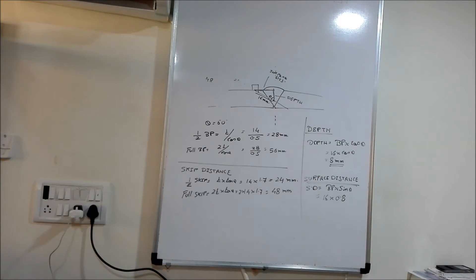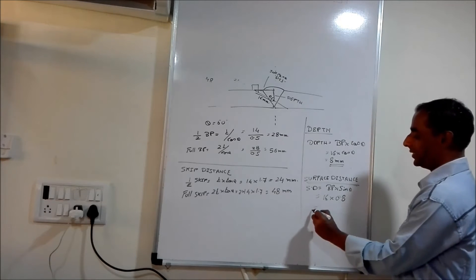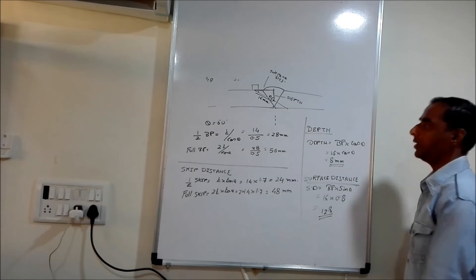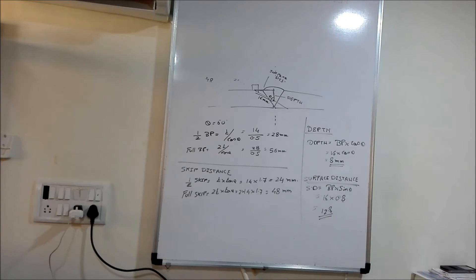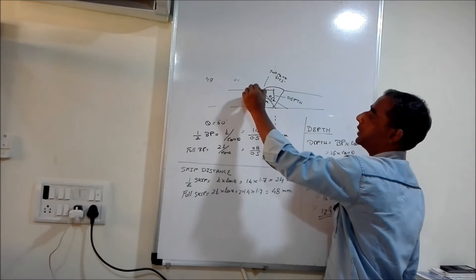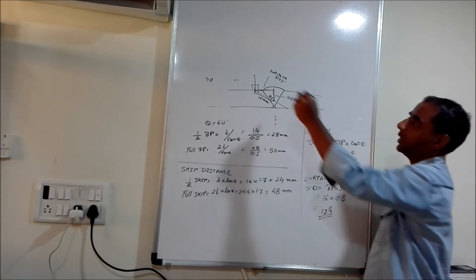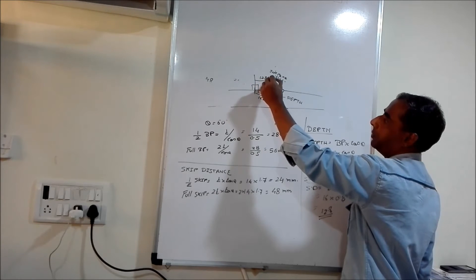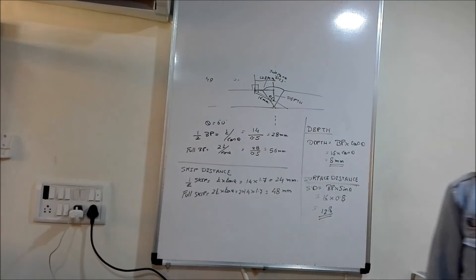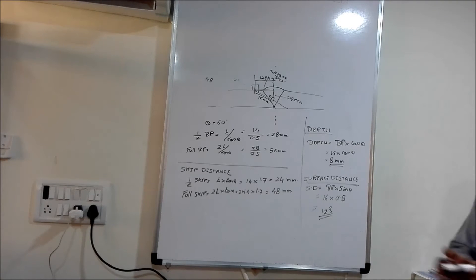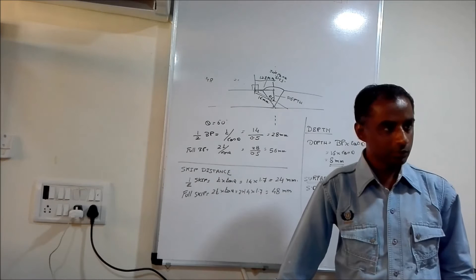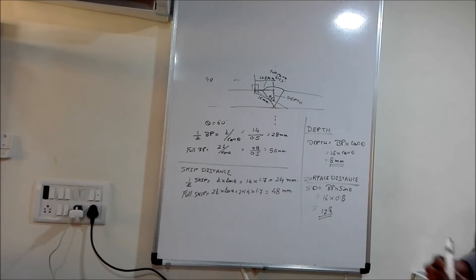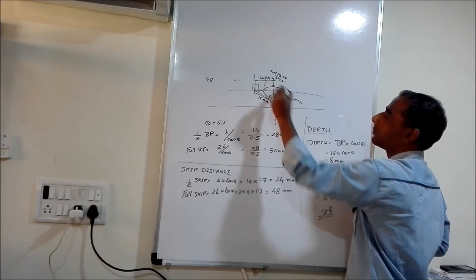Height is equal to bp into cos theta. So depth is equal to bp into cos theta.